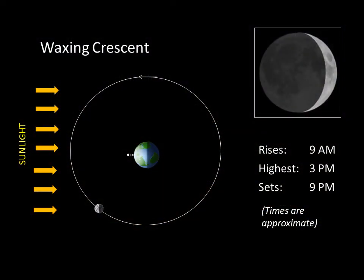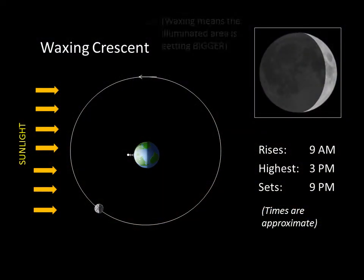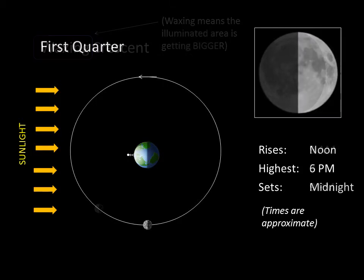The Moon is now a waxing crescent. Whenever we see more of the lit portion of the Moon, we say it's waxing. For about a week, it will grow from a tiny crescent shape until it looks like a half circle in the sky. When the Moon looks like this, it's called a first quarter Moon.